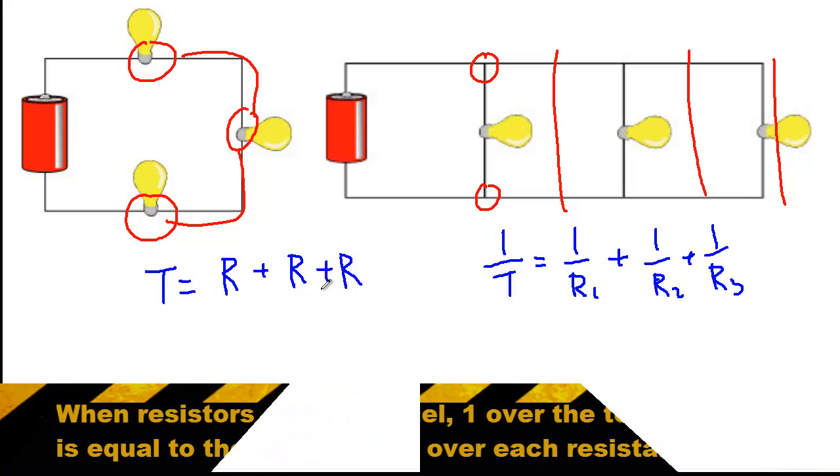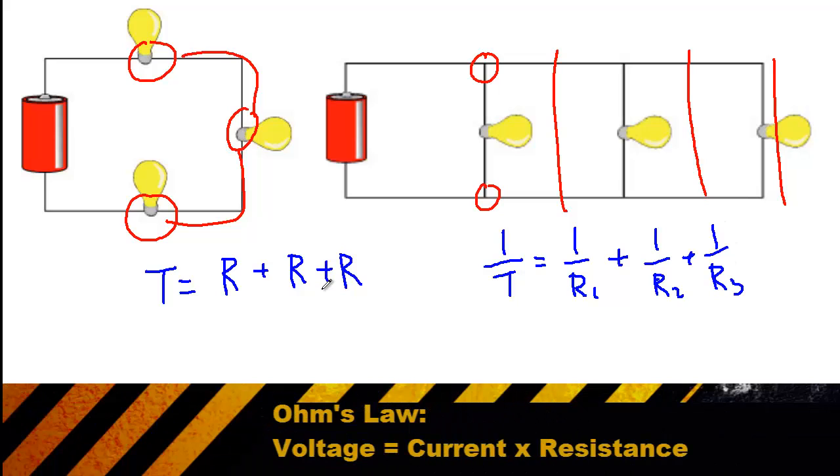When you're looking at the relationship between voltage and current and resistance, both the individual resistors and the entire circuit as a whole will follow what's called Ohm's law, which is the voltage is equal to the current, which we describe with the letter I, the current times resistance.